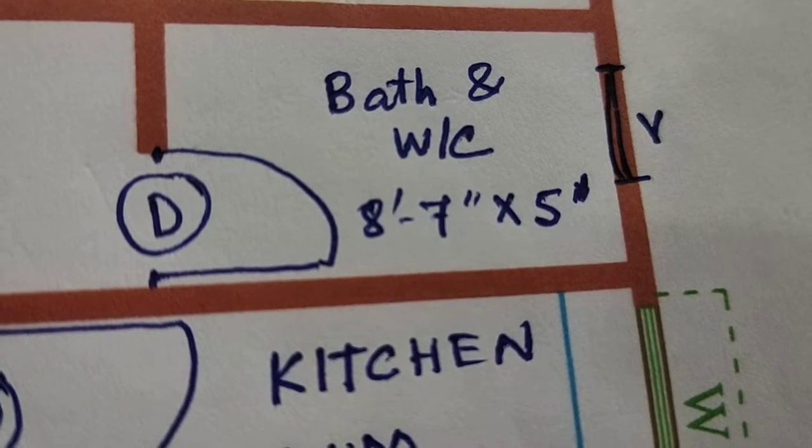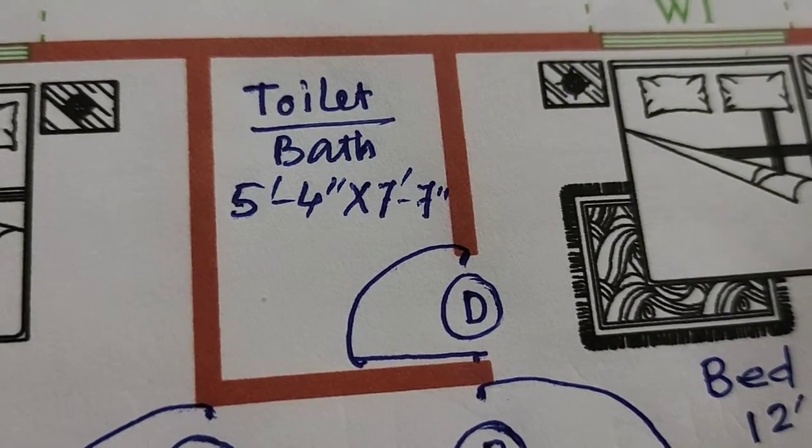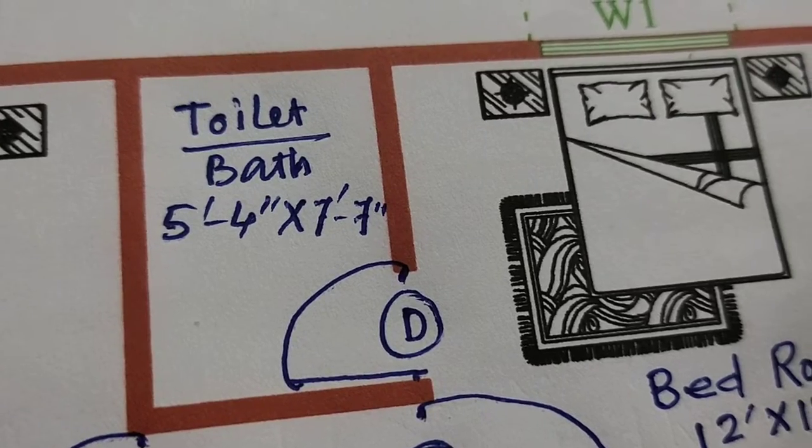Common bath and WC, 8 feet 7 inches into 5 feet. Attached toilet, 5 feet 4 inches into 7 feet 7 inches.